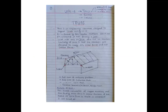Truss is an engineering structure designed to support loads acting on it. It is formed by thin slender members. This portion is being called as a member. They are thin — meaning having lesser thickness. Slender means the cross section is much lesser than the third dimension. These members are pin connected at ends, meaning a hinge joint is there at the end, forming a joint.